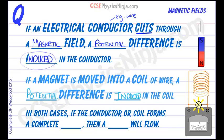In both cases, if the conductor or coil forms a complete circuit, then a current will flow.